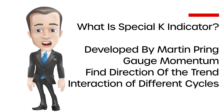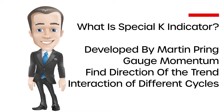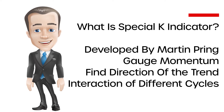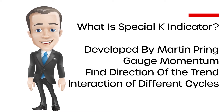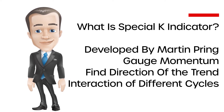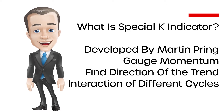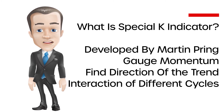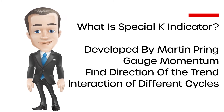What is the Special K Indicator? The Pring Special K is an indicator developed by Martin Pring to gauge momentum. It can be used to find the direction of the primary trend and to identify its turning points. Sometimes it leads these turning points, sometimes it lags them.